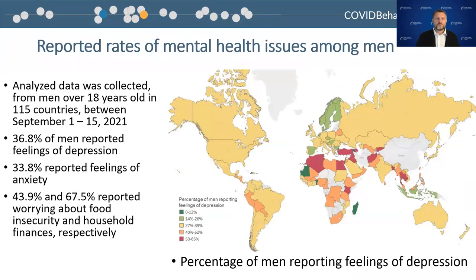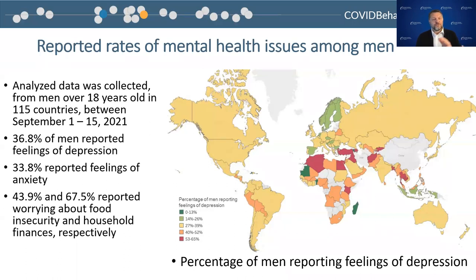Using some descriptive statistics, we analyzed the mental health questions from the CTIS and found that 36.8% of men globally reported feelings of depression, 33.8% reported feelings of anxiety, 43.9% worried about food insecurity, and 43.9% of men were worried about finances. For each indicator, prevalence was markedly higher among younger men and steadily decreasing among successive older age groups. For example, 44% of 18-to-24-year-old men worldwide reported feelings of anxiety, compared with 22.8% among those men 55 years and older. Prevalence also varied substantially between countries. What's important to note is that women's rates for depression and anxiety were similar and actually slightly higher.